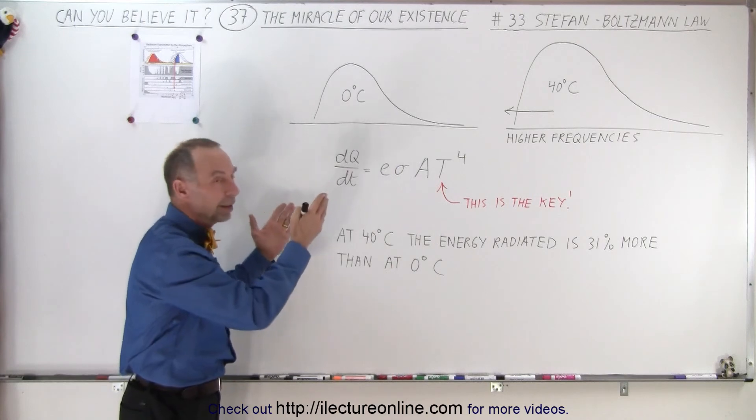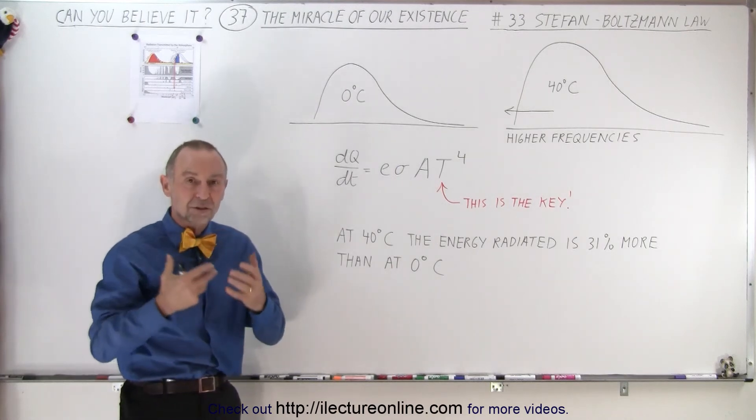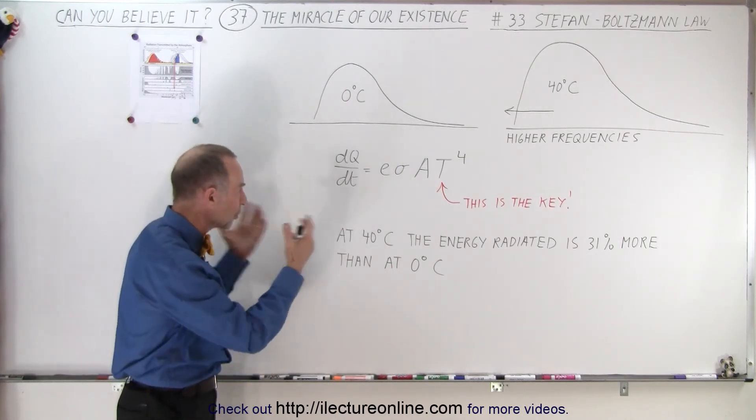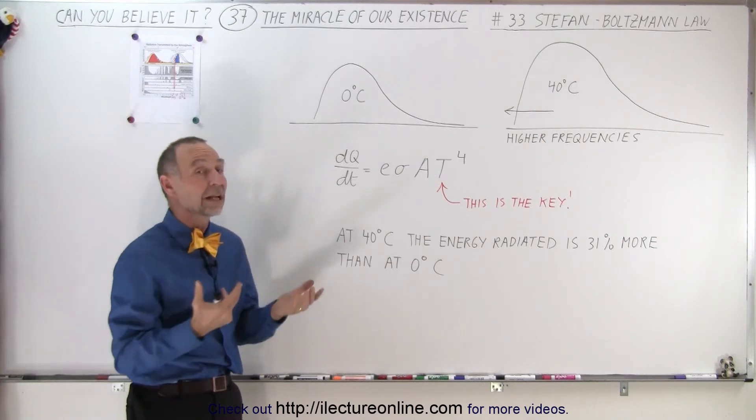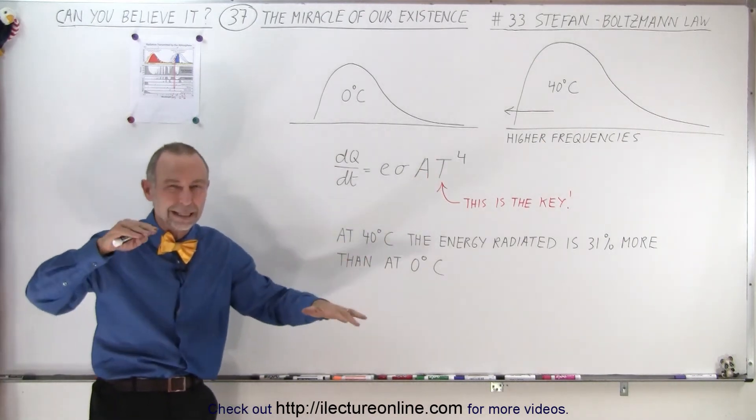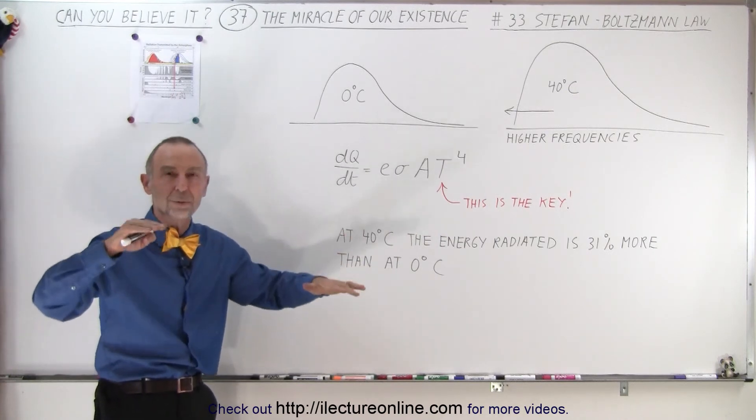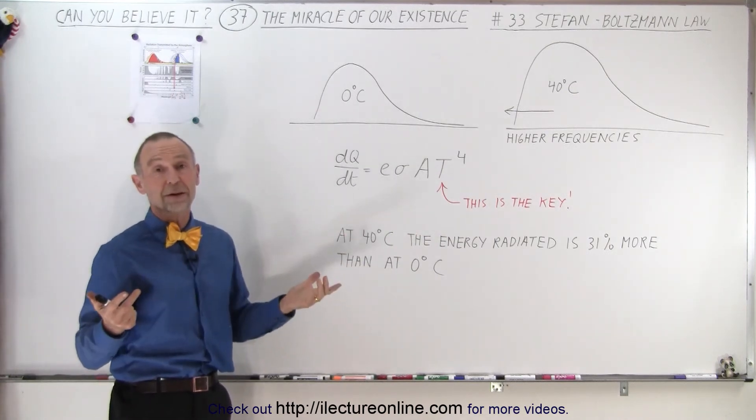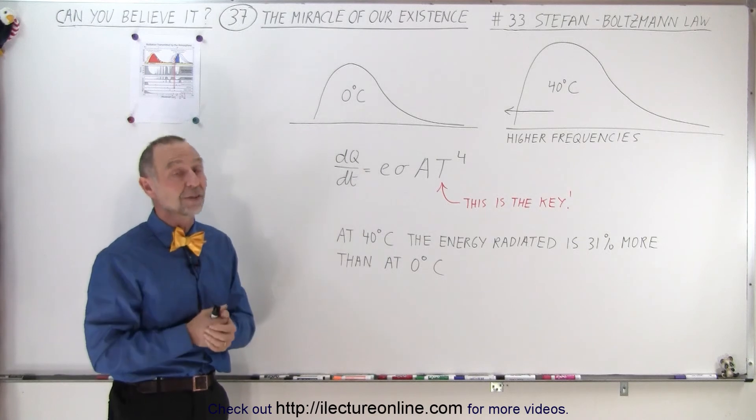And again, that's simply an aspect of nature. This is how nature works. This is how the universe works. The amount of radiation is simply dependent on temperature to the fourth power. So again, it keeps the temperature right where we'd like it to be, as much as possible, around 15 degrees Celsius.